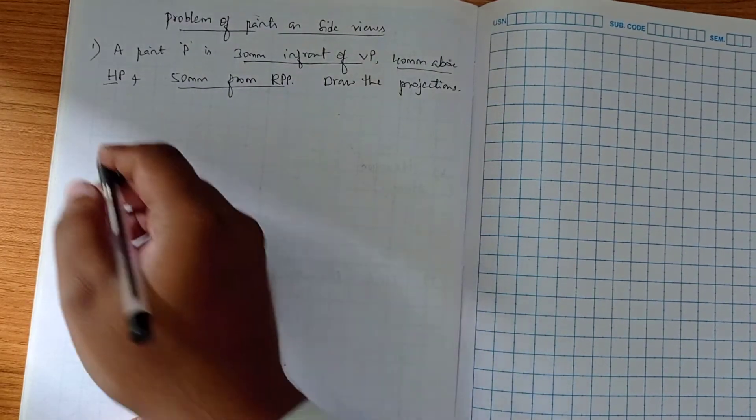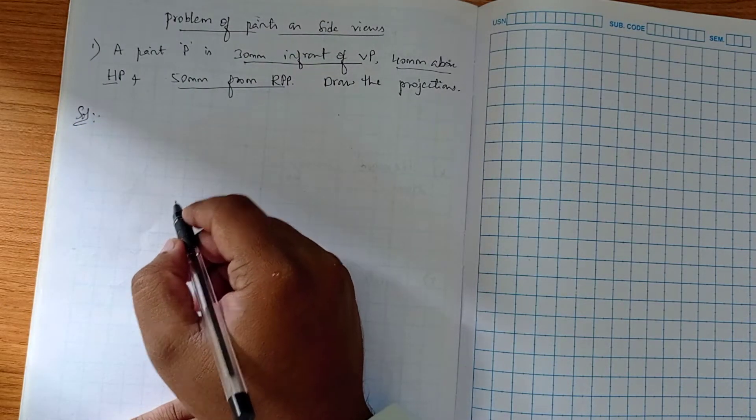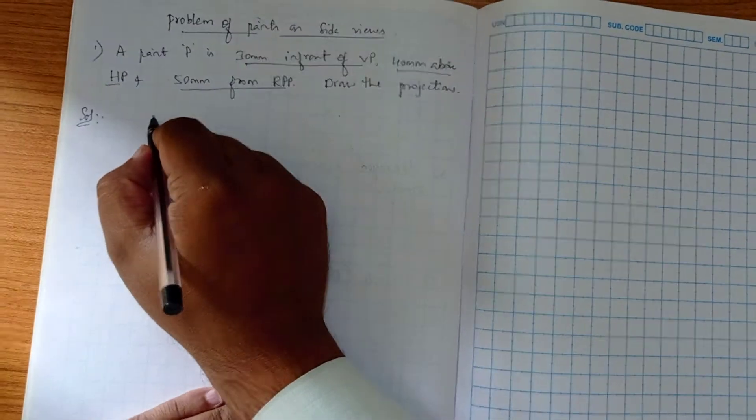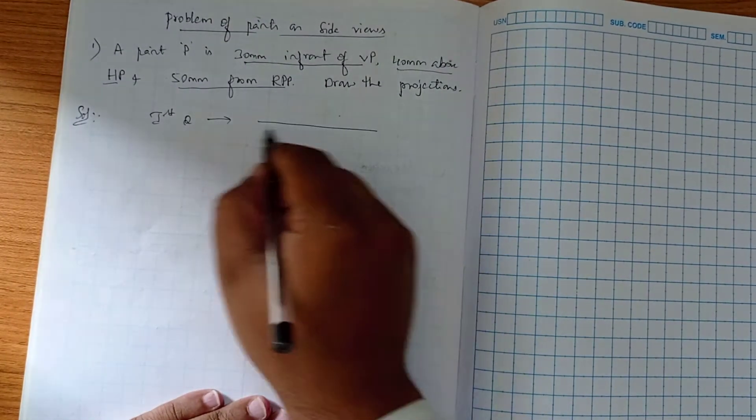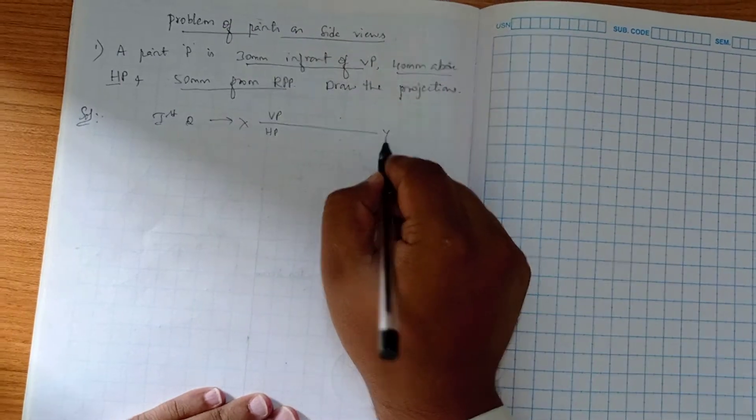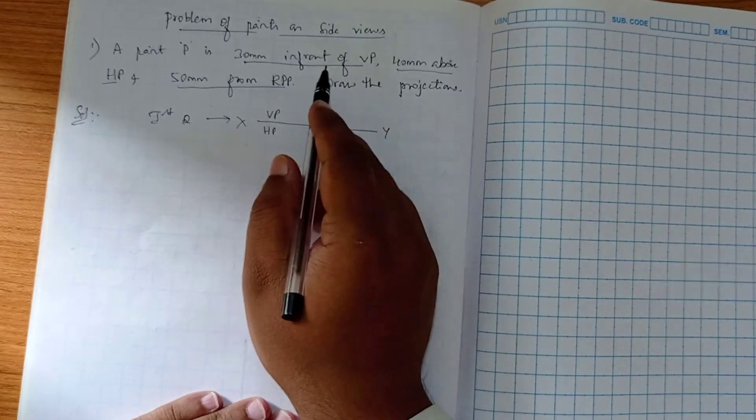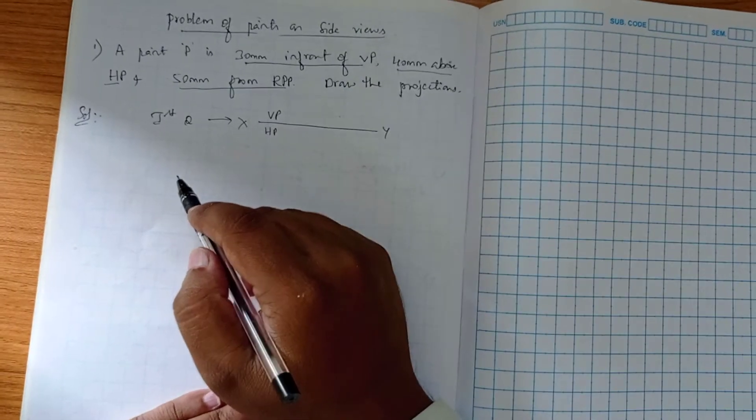In this problem, as we know, it involves three concepts. First to identify the quadrant: in front of VP and above HP means it is our first quadrant. For the first quadrant we know the notations: VP, HP, XP. That means first we are going to draw this first quadrant top and front view.